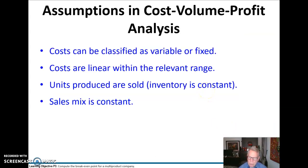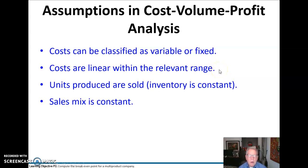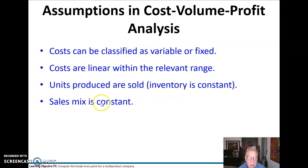We do have some assumptions when we do a cost-volume profit analysis. We assume that everything can be either a variable or a fixed cost, though we know there are some mixed costs. We assume all costs are linear within a relevant range, which is generally a pretty good assumption. Units produced are sold, meaning inventory doesn't go up or down from period to period. And our sales mix is constant — in the last example, 60-40 — though we know that sometimes changes as well.